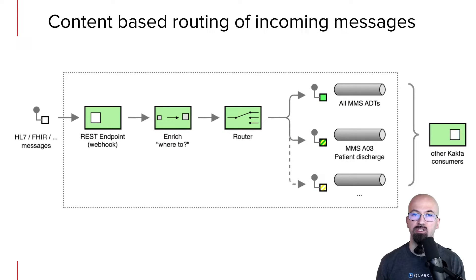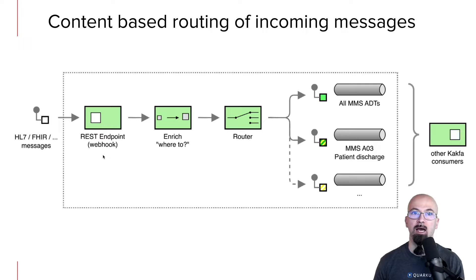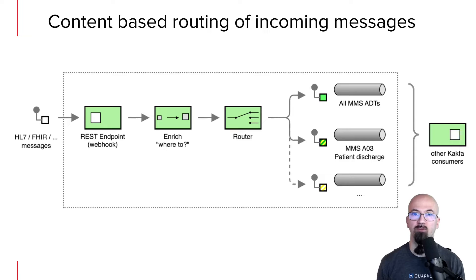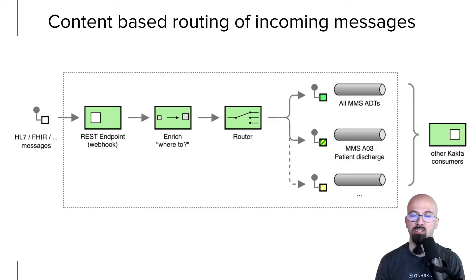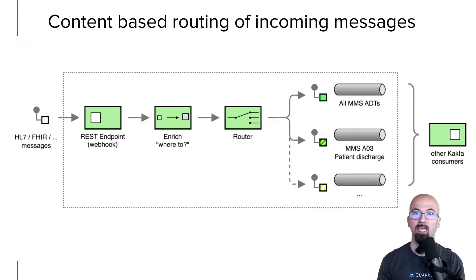Here we have the enterprise integration pattern diagram of our application, starting from a REST endpoint that is our ingress. This can also be thought of as a CDS hook in a healthcare context. In the slide we have represented HL7 FHIR type of messages, but similarly you can think about any type of message you want to process with content-based routing. The first step in the application flow is the enrichment — an enterprise integration pattern where we take the message and decide where we want to dispatch it. Like at the airport, when you drop off your baggage at the counter, depending on where you're going, a label is placed on your luggage that determines how it will be dispatched.